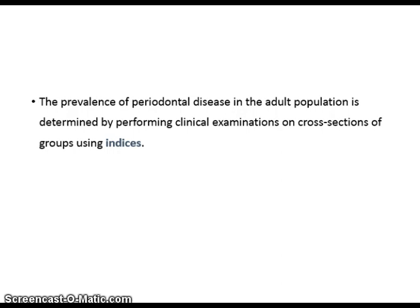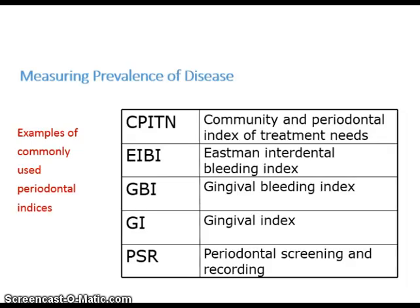The prevalence of periodontal disease in the adult population is determined by performing clinical examinations on cross-sections of groups using indices. Here are examples of commonly used periodontal indices: CPITN, Community Periodontal Index of Treatment Needs; EIBI, Eastman Interdental Bleeding Index; GBI, Gingival Bleeding Index; GI, Gingival Index; and PSR, Periodontal Screening and Recording.